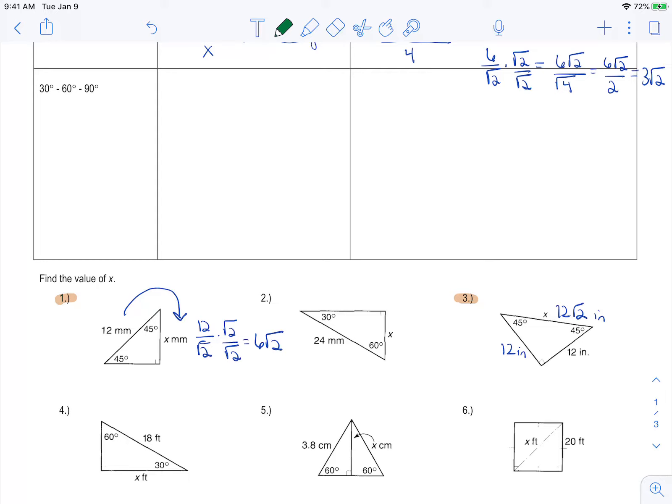All right, now this video is going to cover the second special right triangle. So there's only two. The first one was when you have a 45-45-90 degree triangle. The next one is when you have a 30-60-90 degree triangle.